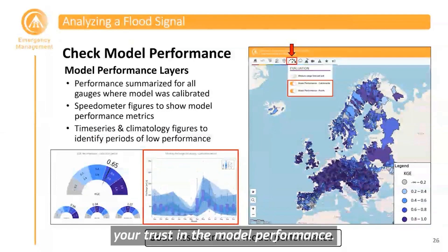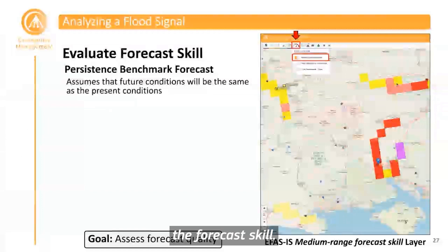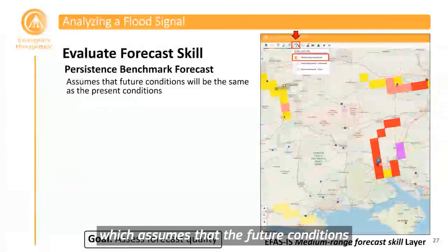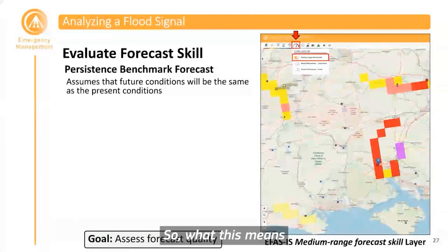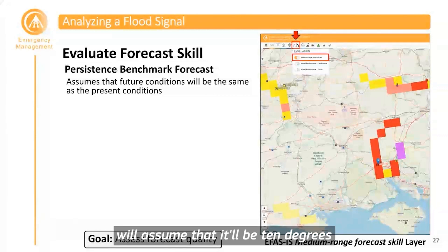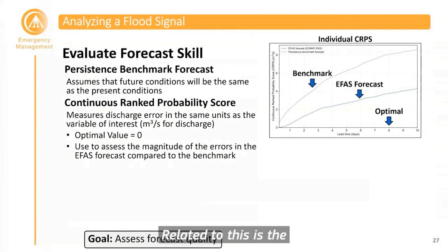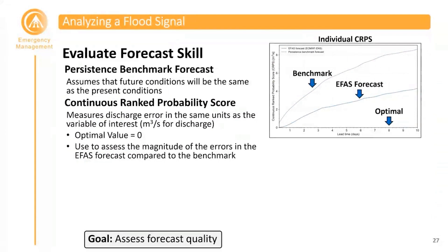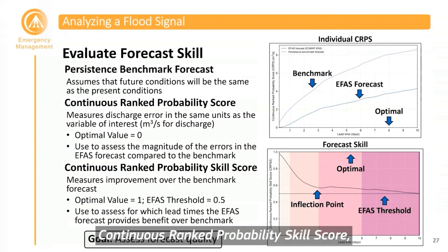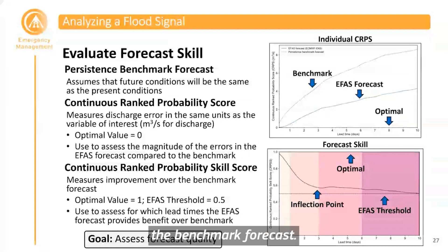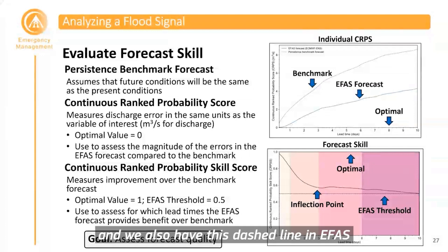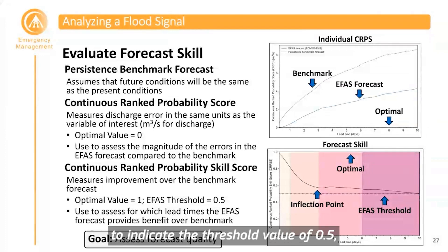Related to that, you may also want to assess the forecast skill. In EFAS, a persistence benchmark forecast is used, which assumes that future conditions will be the same as present conditions. The continuous rank probability score (CRPS) measures discharge error in the same units as the variable of interest — cubic meters per second — with an optimal value of zero. The continuous rank probability skill score measures improvement over the benchmark forecast, with an optimal value of 1 indicating a perfect forecast. A dashed line indicates the threshold value of 0.5, meaning the EFAS forecast provides 50% less error than the benchmark. A value below zero indicates that the EFAS forecast is less skillful than the benchmark.